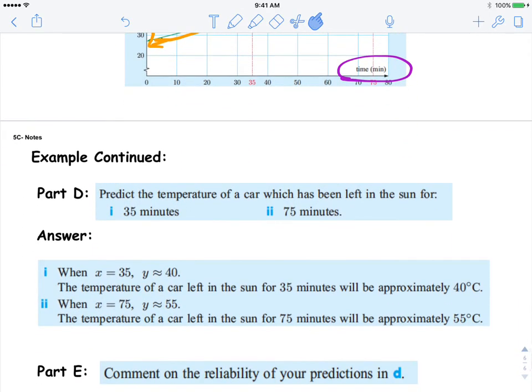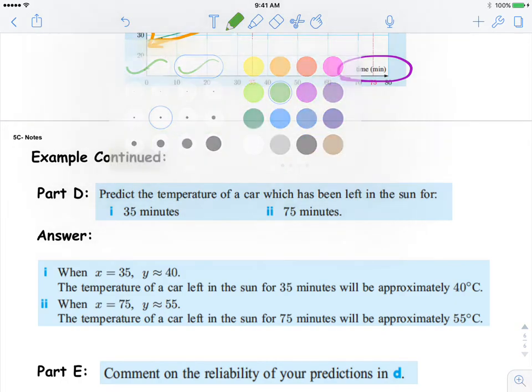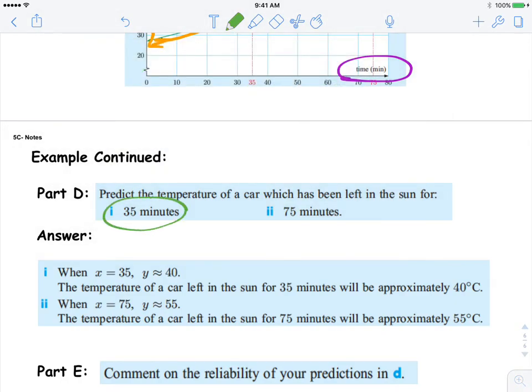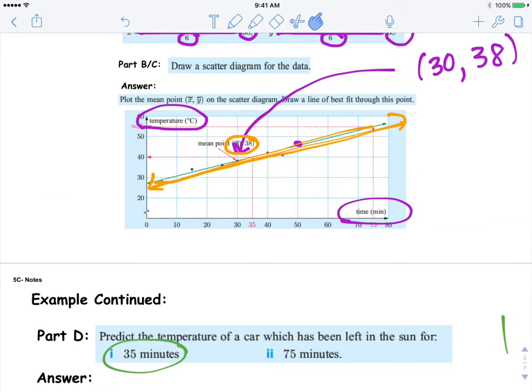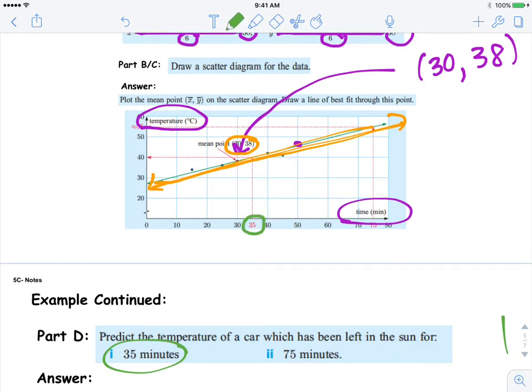Now part D: predict the temperature of a car which has been left in the sun for 35 minutes. So when we go up, you'll go to 35 on the x-axis.